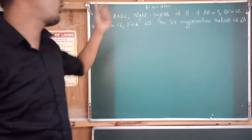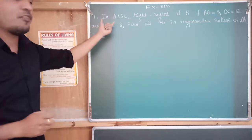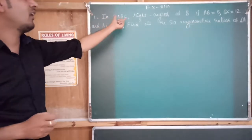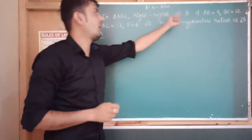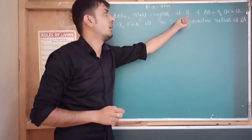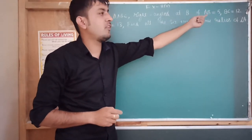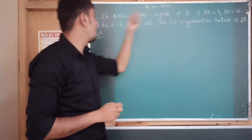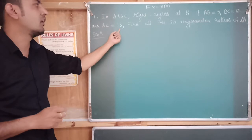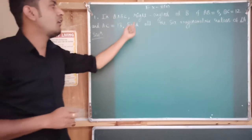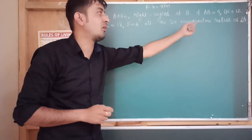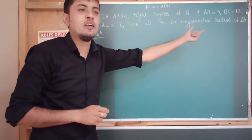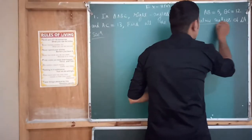We are looking at problem number 1. In triangle ABC, right angle at B, AB is given to be 5, BC is given to be 12, and AC is given to be 30.